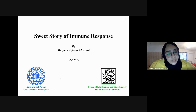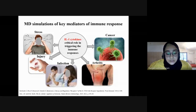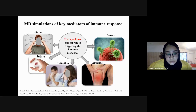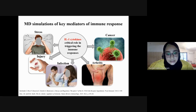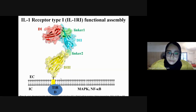Today I'm going to talk about my ongoing project on the immune response. You might think that this is a sarcastic title, but it's not — because I'm going to talk about the molecular mechanism of immune response in the presence of sugar moieties, so it is in fact a sweet talk. The IL-1 family of cytokines plays critical roles in triggering the immune response in several conditions such as injury, infection, and stress, and in more serious situations such as cancer and arthritis.